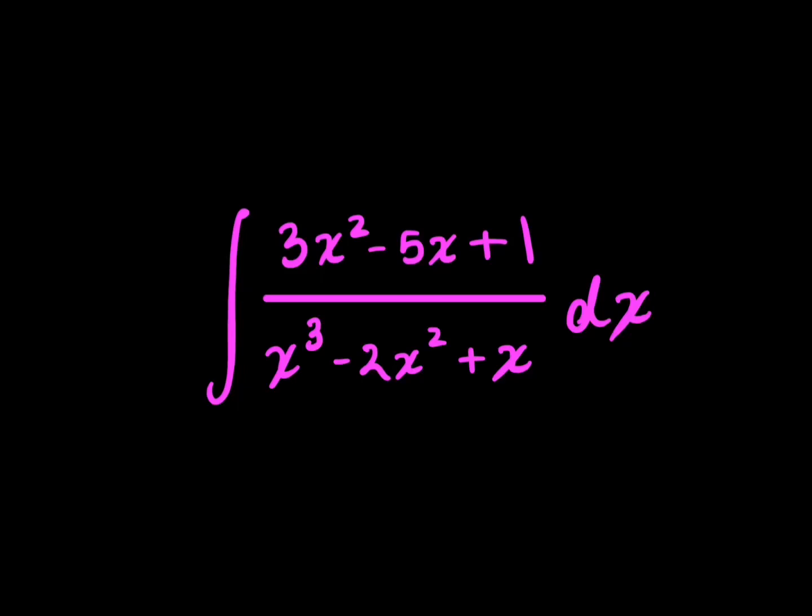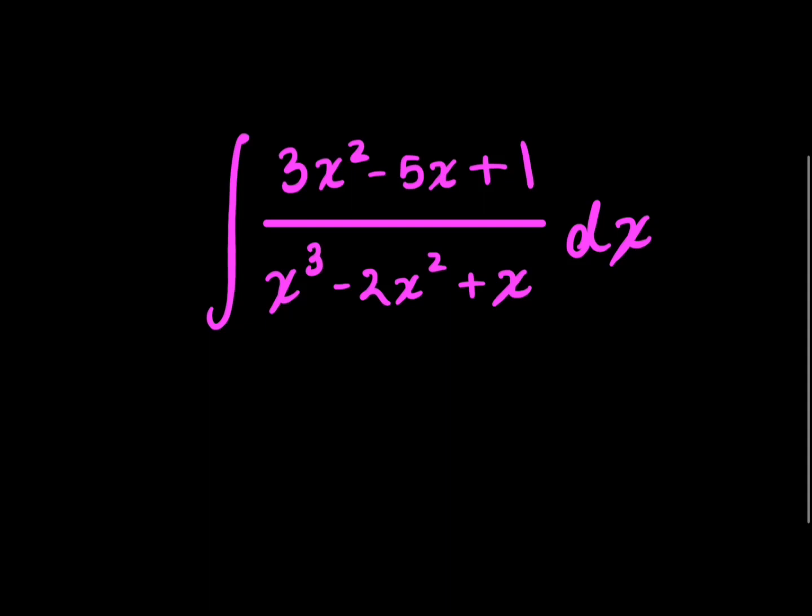Let's integrate 3x squared minus 5x plus 1 over x cubed minus 2x squared plus x dx. Now this is a classic partial fraction decomposition question because you have this nasty fraction, but you could decompose this into parts and it would be much easier to integrate it that way.